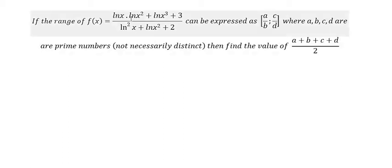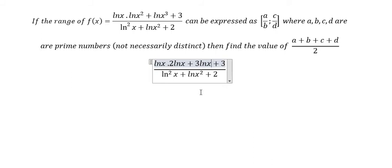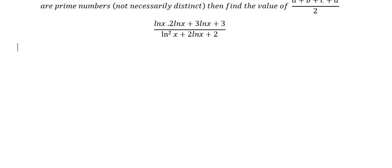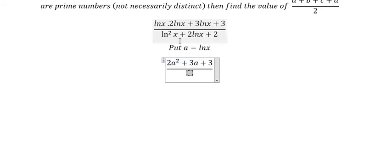I will show you the technique to answer the question. We have the power 2 on x inside ln, so we put the number 2 here. Similarly for x to the power of 3, we put number 3 here, and we have number 2 here. We let a = ln(x), so we get a new expression. ln(x) · ln(x) gives ln(x)² which becomes 2a², and we get 3a + 3.